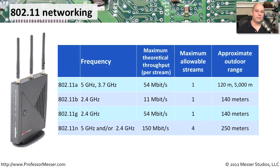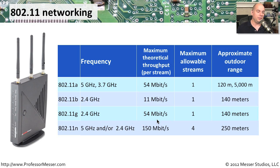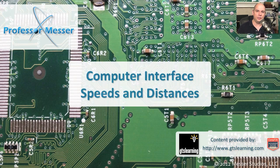One of the most common wireless standards is 802.11 wireless, and there have been four major versions. For 802.11a, we can run up to 54 megabits per second and generally get about 120 meters, although special US government licensing can increase that up to 5,000 meters. For 802.11b, the maximum is 11 megabits per second up to about 140 meters. 802.11g runs the same distance but increases the speed up to 54 megabits per second. And 802.11n allows a maximum theoretical throughput of 150 megabits per second per stream over about 250 meters, with multiple data streams increasing total throughput up to 600 megabits per second.